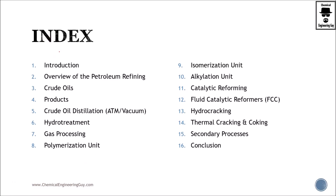This is the content of the course. I wanted to explain the structure and how I organized it. I tried to be as linear as possible, but there are plenty of processes which occur simultaneously. For instance, the polymerization unit takes advantage of everything produced in the FCC. If you're talking about gas processing, you're going to obtain gases formed either in thermal cracking, hydro cracking, or catalytic reforming.